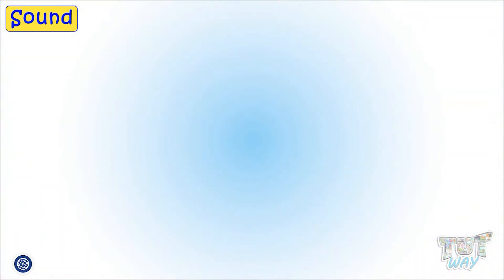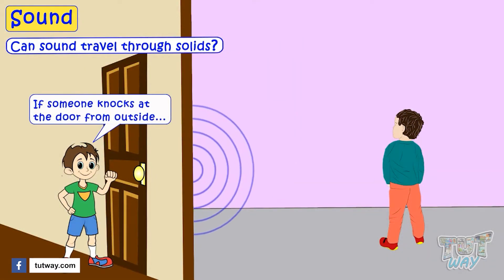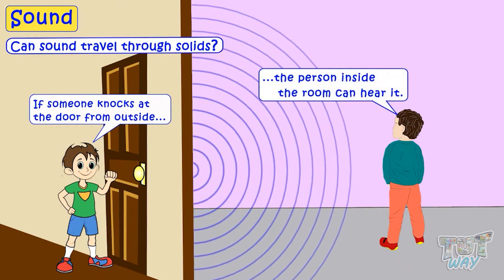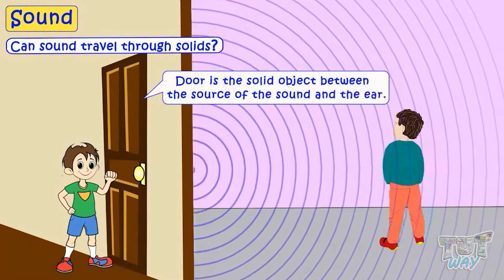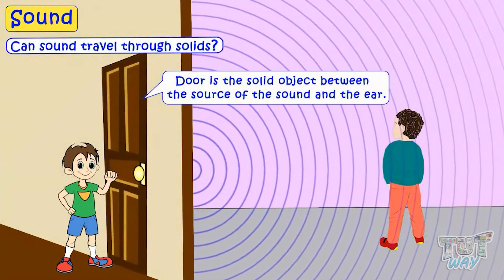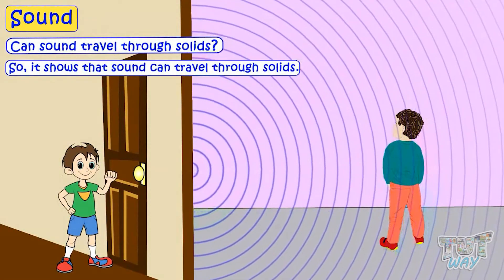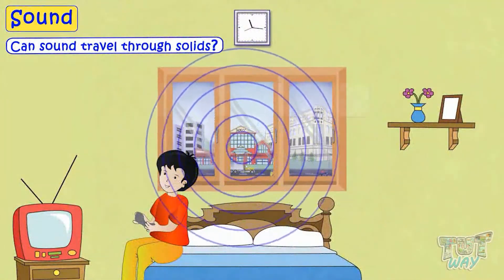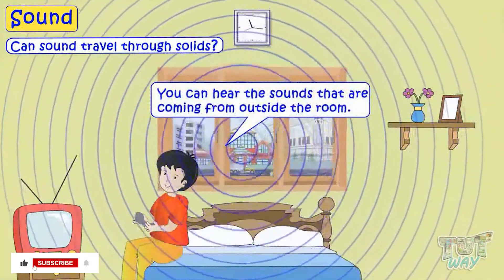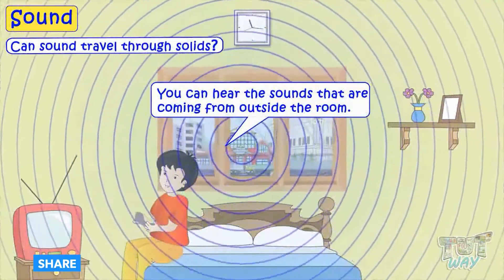Now let's see if sound can travel through solids. If someone knocks at the door from outside, the person inside the room can listen. There is a solid object — a door — between the source of the sound and the ear, so it shows that sound can travel through solids. Similarly, if there is any loud noise outside the room, you can hear it inside, which also shows that sound can travel through solids.